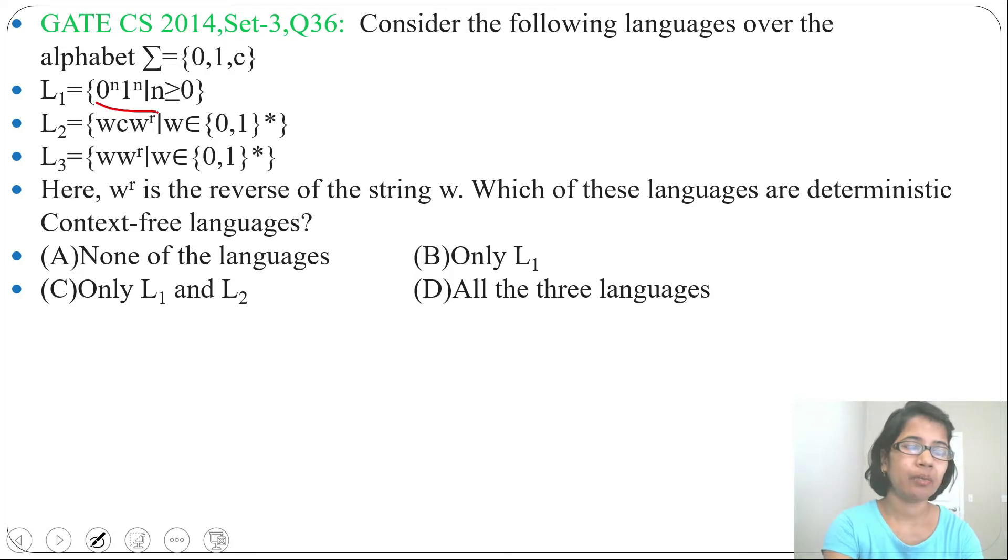L1 = {0^n 1^n}. So what we can do, for 0 you can push and for 1 you can pop. So that's a DPDA. There is no confusion, for 0 you just push onto the stack and for 1 you will pop.